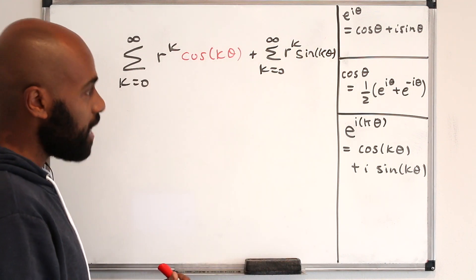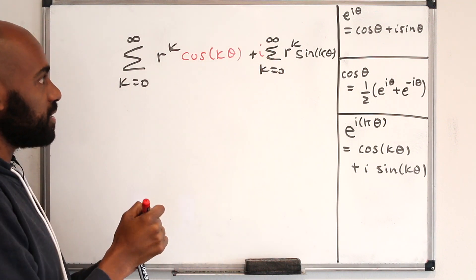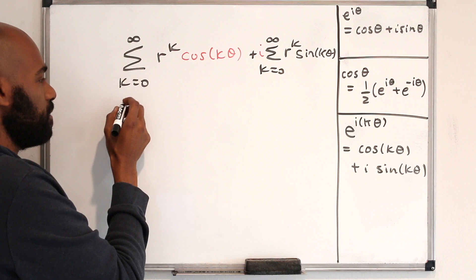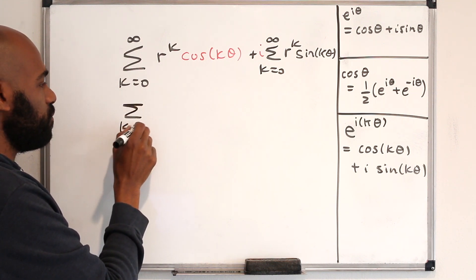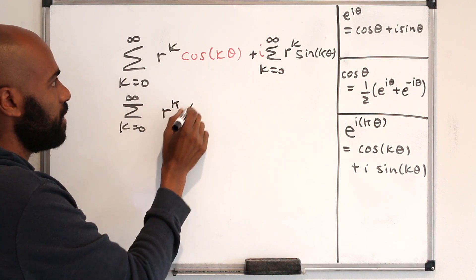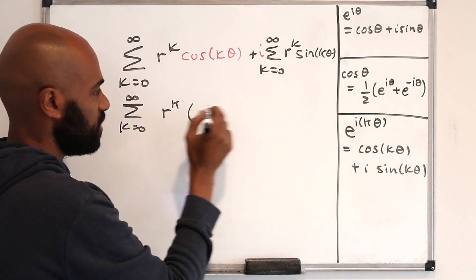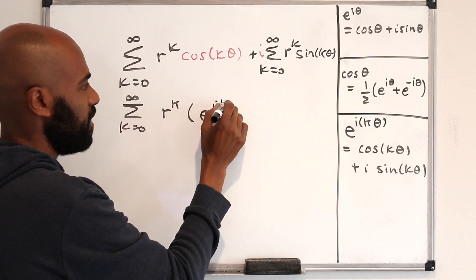with an i in front. And the reason to do that is if we collect this all together, we'll get the sum k equals 0 to infinity of r to the k times cosine k theta plus i sine k theta, which is e to the i k theta.